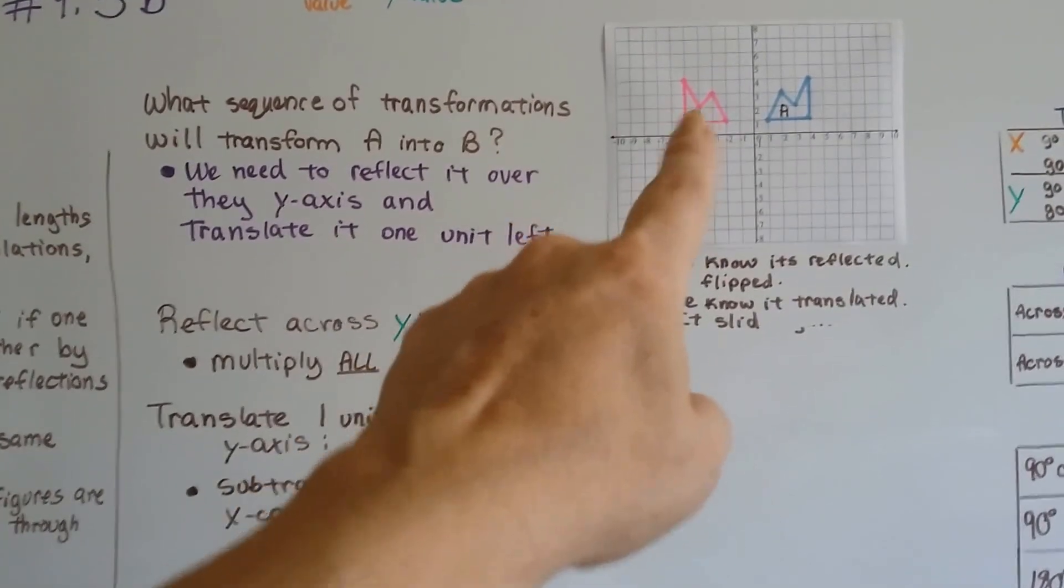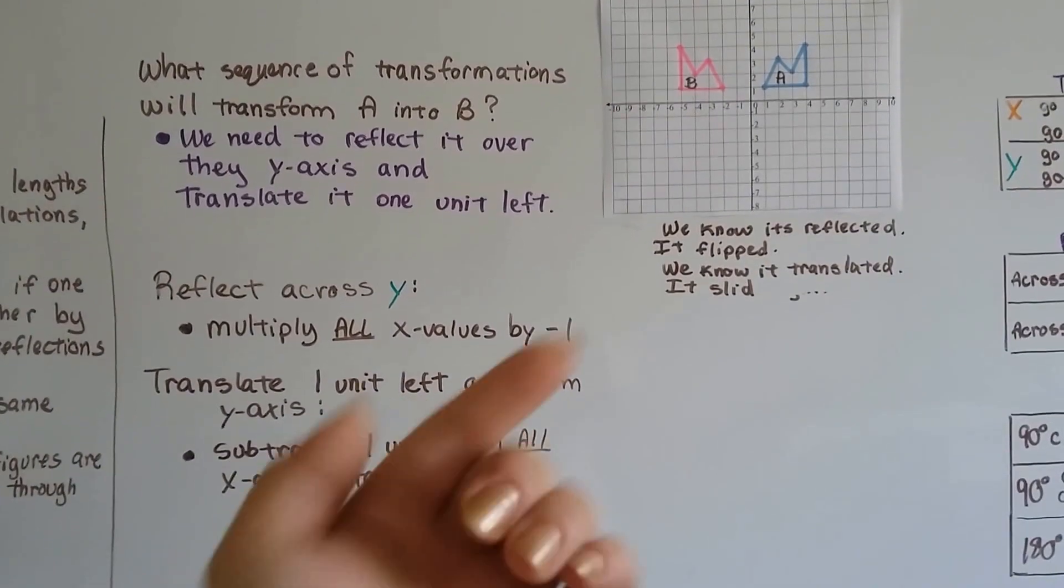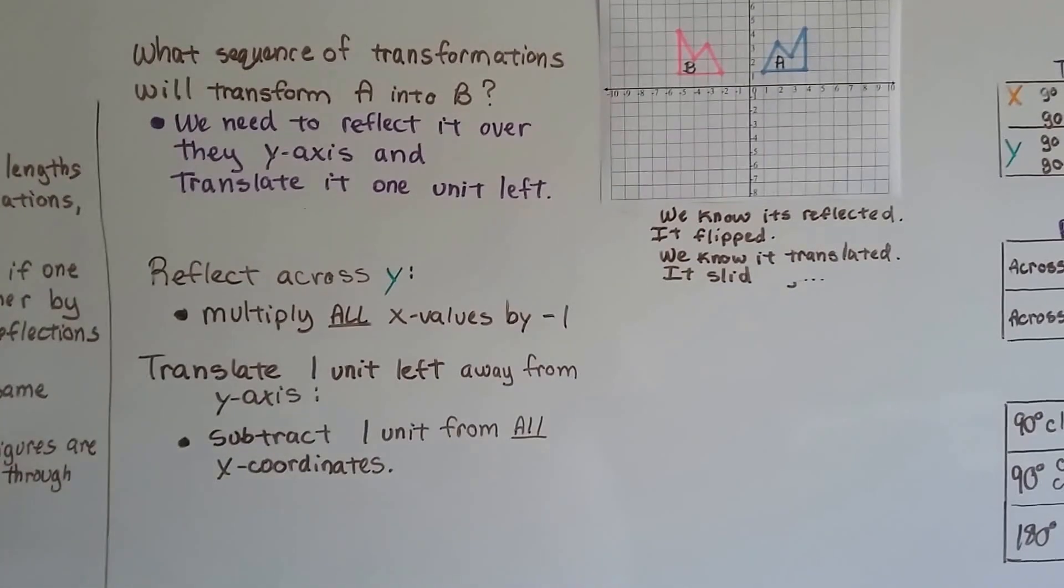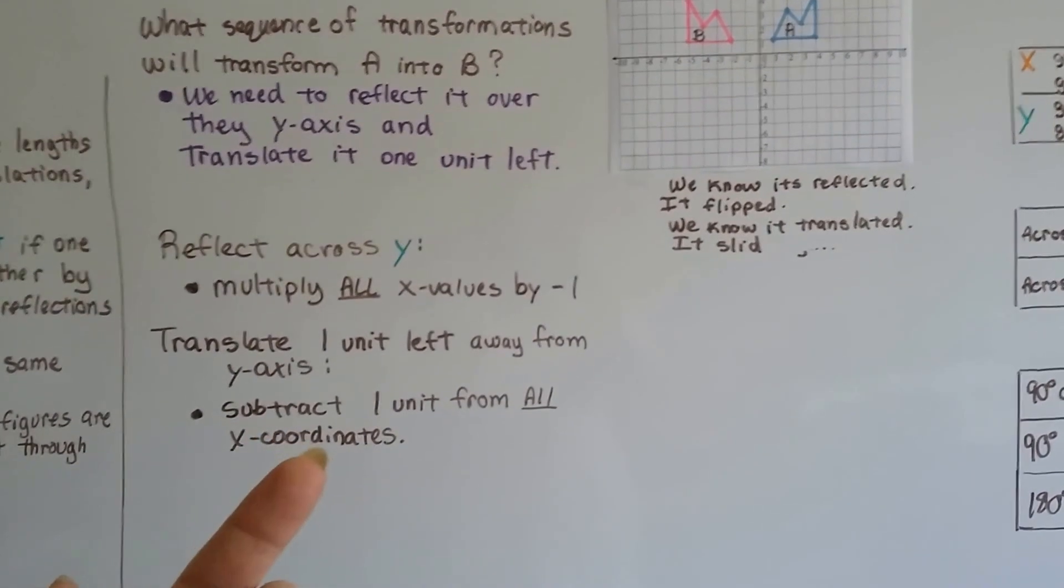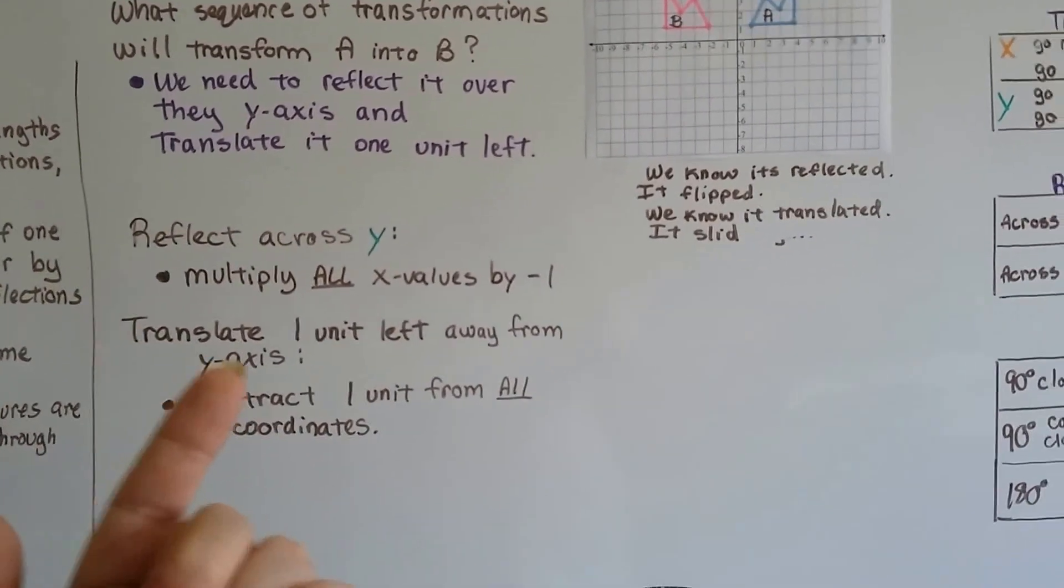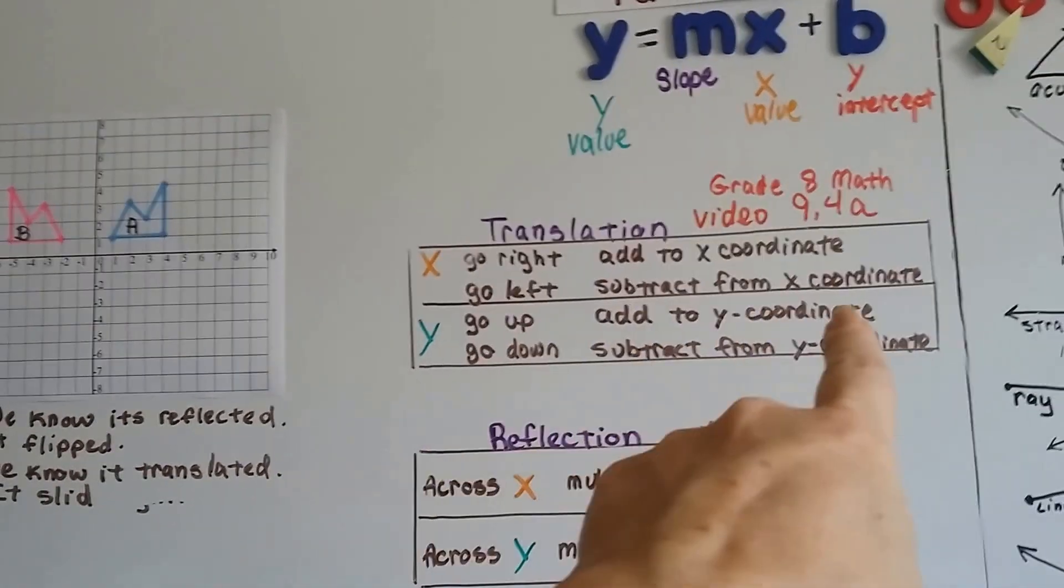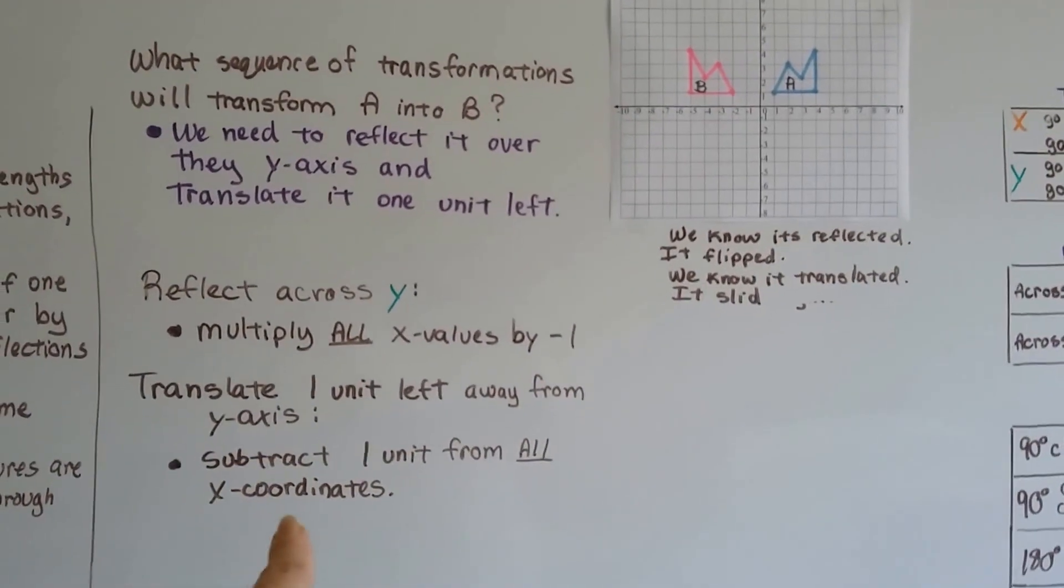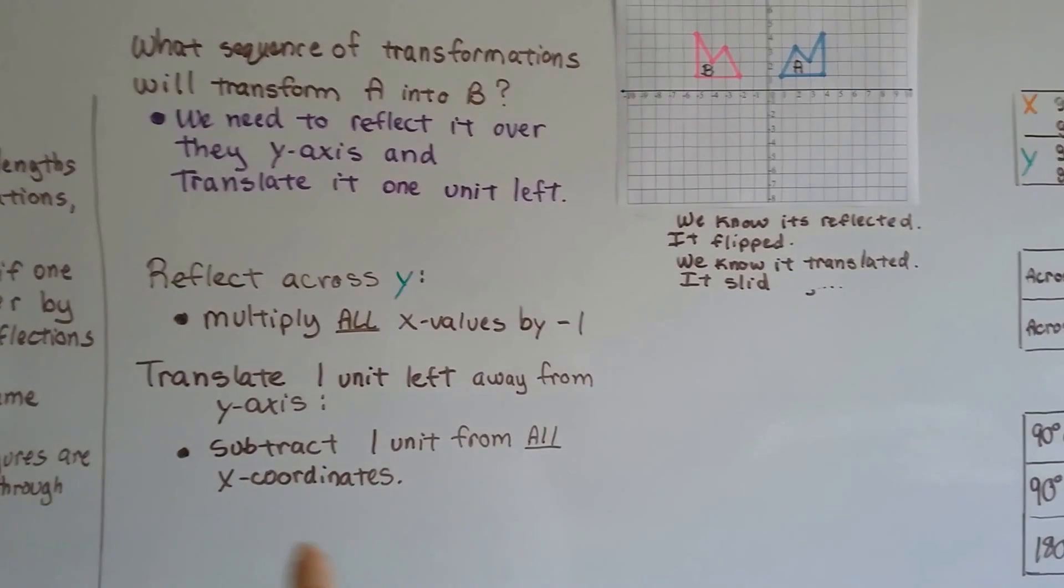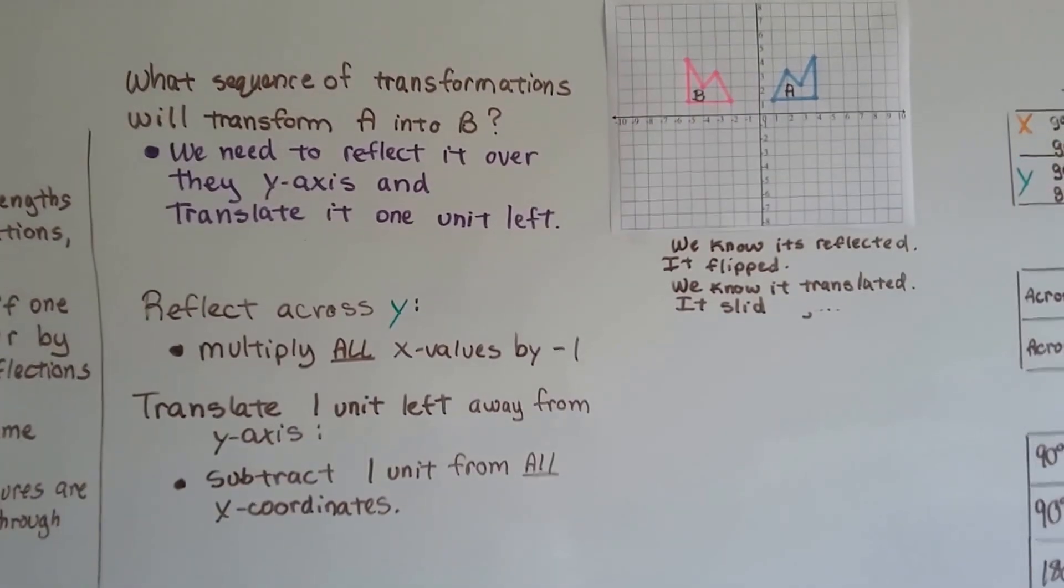So, we multiply all the x values for these points in A by a negative 1, and that'll tell us where they're supposed to be for the reflected version of this shape. Then, to slide it to the left, we need to subtract one unit from all the x coordinates to translate it that one unit left. Here's the translation rule. To go left, we have to subtract from the x coordinate. So, we would subtract one unit from all the x coordinates of the reflected version.